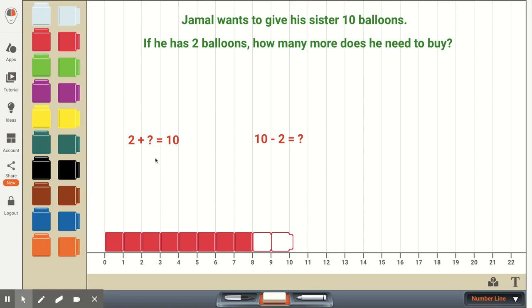So we may first think of this as, well, we have 2 balloons, so 2 plus some missing addend here, 2 plus something is equal to 10, our part, part, whole.